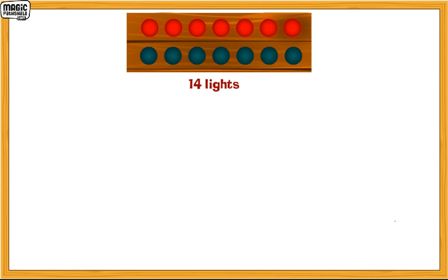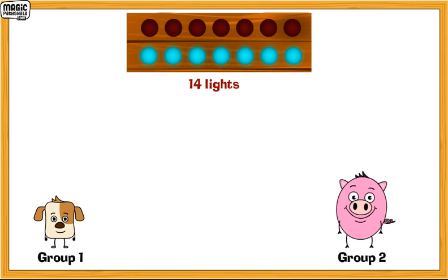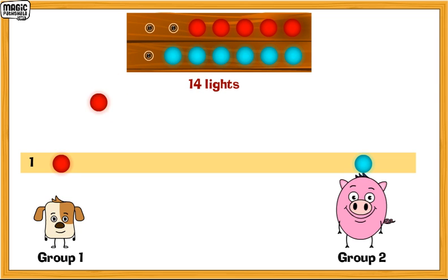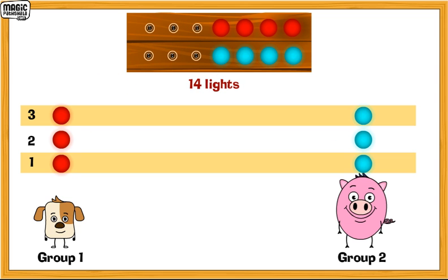You have to make 2 equal groups of lights. So start by placing the lights one at a time in each group and continue till all the lights are distributed.